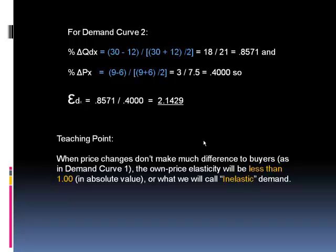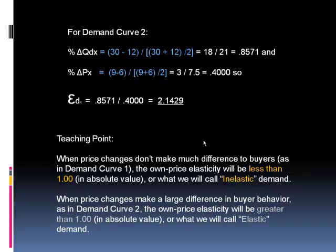Quick point to remember. We'll reiterate this in a minute. When price changes don't make much difference to the buyers, which is what we saw in that steep demand curve number one, when you calculate the price elasticity of demand, it will be a number less than one in absolute value. Remember these are all negative numbers, but we're ignoring the negative when we take the absolute value. So on demand curve number one, we had an inelastic demand. And here on this slide, on demand curve number two, our coefficient is 2.1429, clearly more than one. And when we calculate that coefficient to be greater than one in absolute value, we're going to say it's an elastic demand.